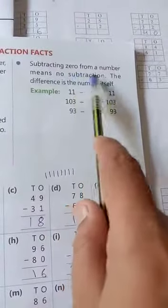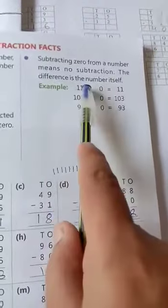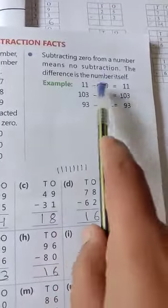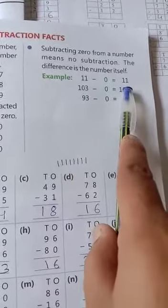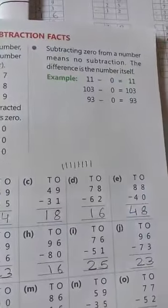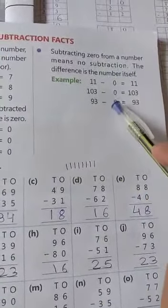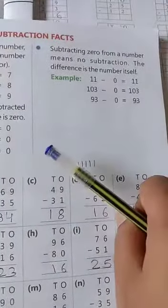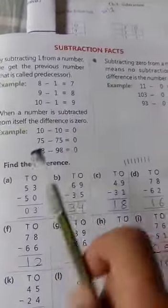Subtracting 0 from a number means no subtraction. The difference is the number itself. When we subtract 0 from any number, we get that same number in the answer. Because subtraction means something going away from us, but when 0 is given, nothing goes away from us. So the same number is our answer. Now everyone remember these three facts in your mind.